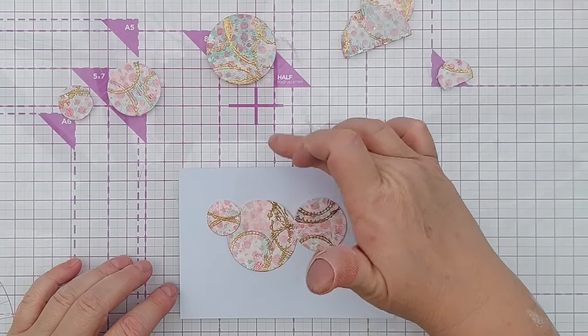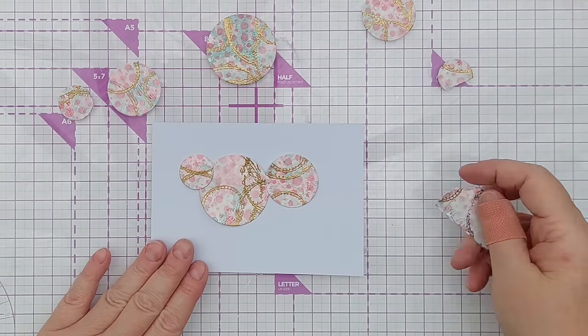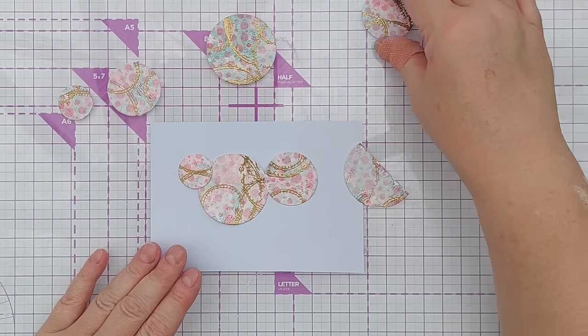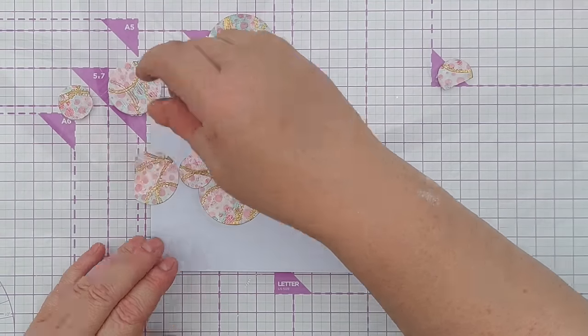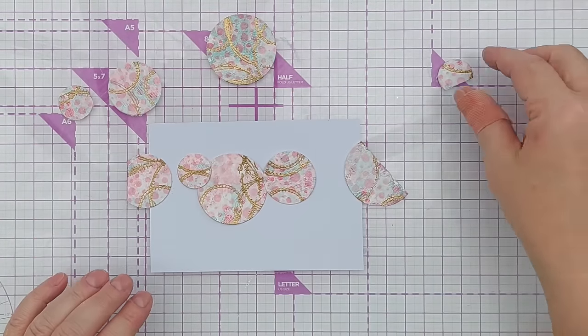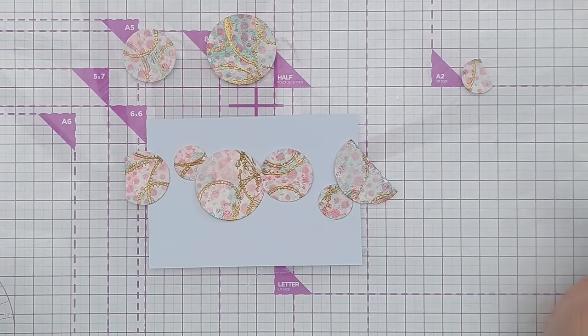And have them hanging down from the top of the card. This is going to be landscape. So these partial circles I can have coming in from the side. I can leave a little gap here and there. Something like that.